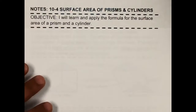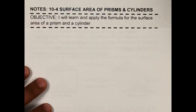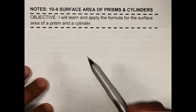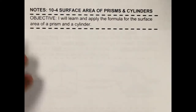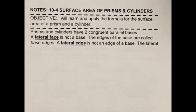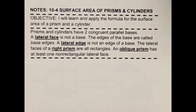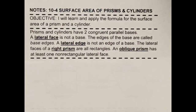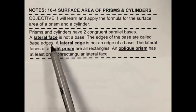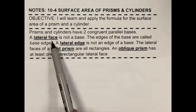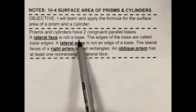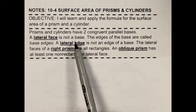We're going to start talking about surface area of prisms and cylinders today. To get started defining these prisms and cylinders, you have to remember that they have two congruent parallel bases, and that a lateral face is not a base. That's going to be important.